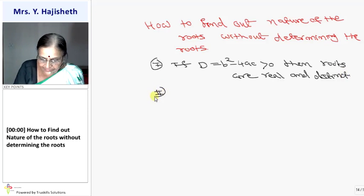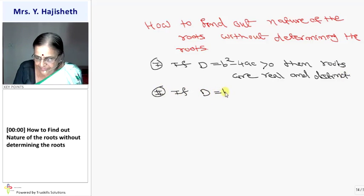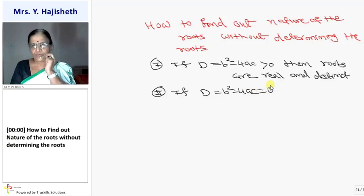Second condition, we already used. If D, that is b square minus 4ac, is equal to 0, then my roots is minus b by 2a.